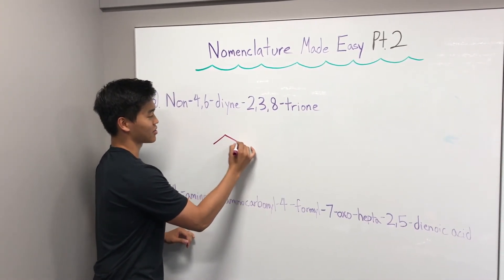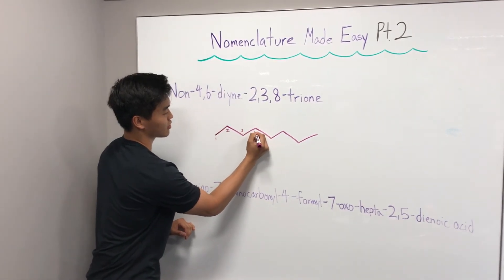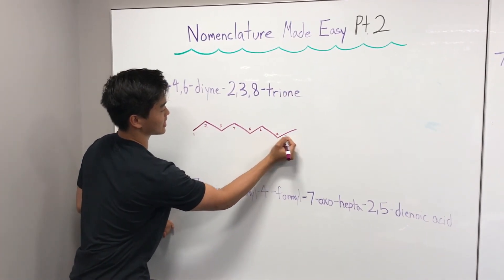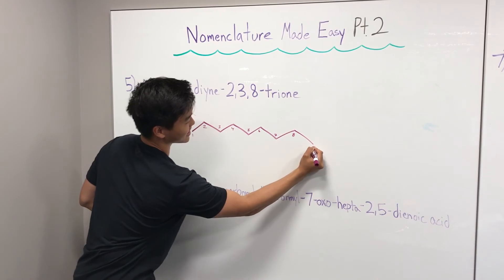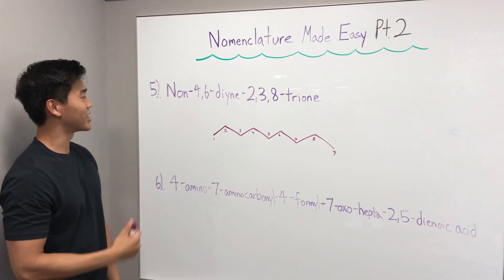You might notice that there's an yne right here, which is a triple bond, which means the shape of our structure might change a little bit, but I'm still going to draw the nine carbons to begin with. One carbon, two, three, four, five, six, seven, eight, nine. So nine carbons in your parent chain.